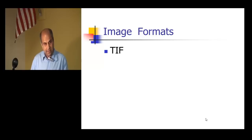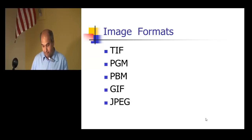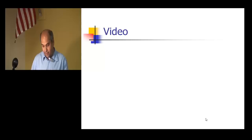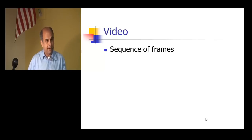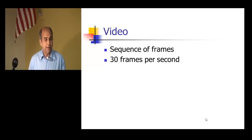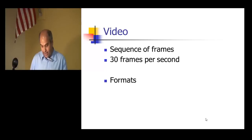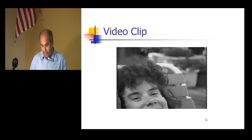There are different image formats like TIFF, PGM, BMP, GIF, and JPEG. Similarly, video is a sequence of images — we just have many images. Typically we will have 30 images per second of video. We have different formats of video like AVI, MPEG, QuickTime and so on.